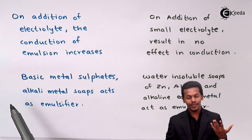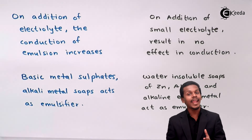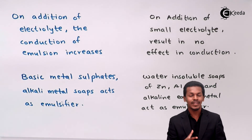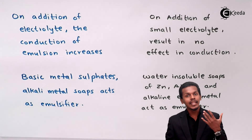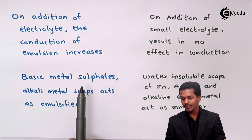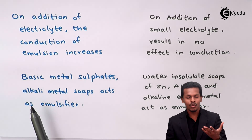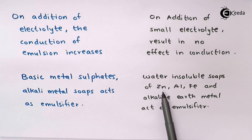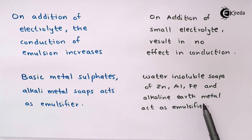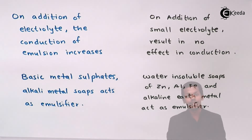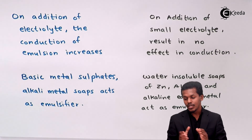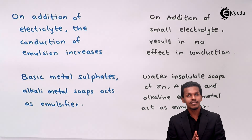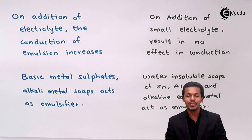The fifth difference involves emulsifiers. In oil-in-water emulsions, alkali metal soaps and basic metal sulphates — which are water-soluble — act as emulsifiers. In water-in-oil emulsions, water-insoluble soaps such as soaps of zinc, aluminium, and iron, along with soaps of alkaline earth metals, act as emulsifiers.